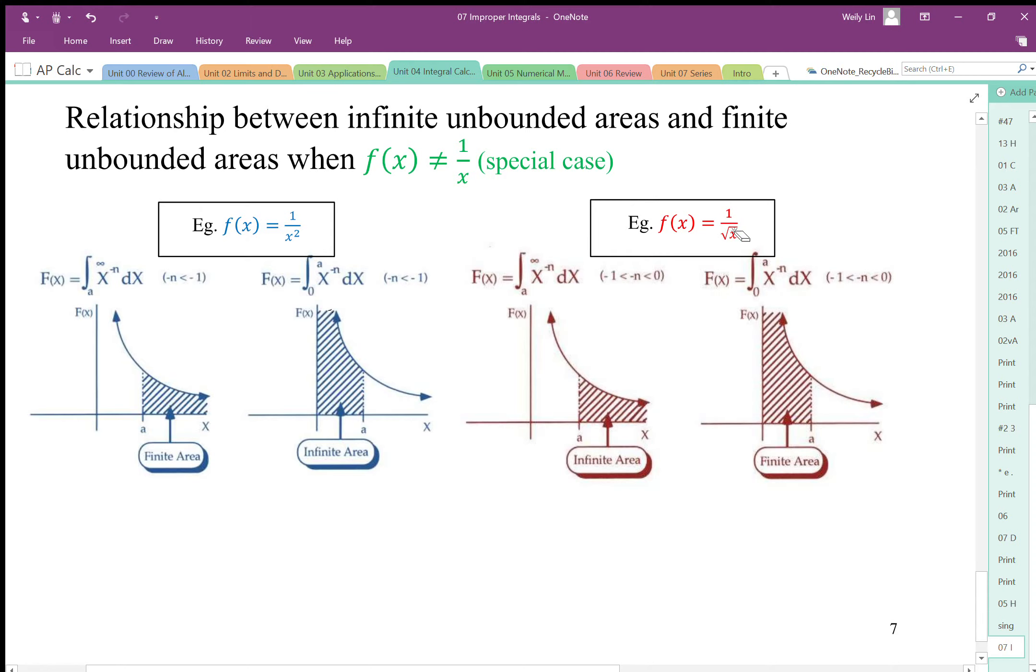So what happens then is that in this case, the denominators, or for any roots, the denominator will tend to infinity slower than 1 over x. And if that's the case, then that means that this goes towards 0 much slower, and it leaves a big gap in here, and that makes this unbounded area infinite.